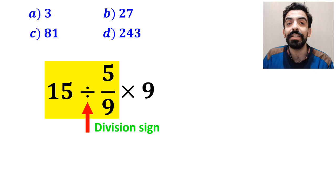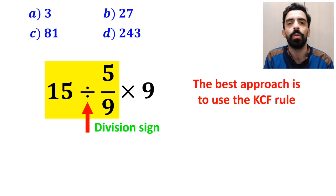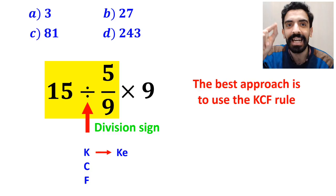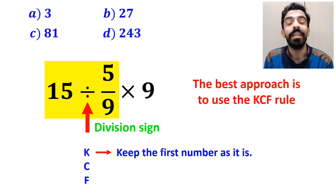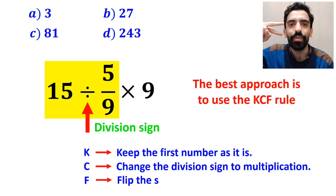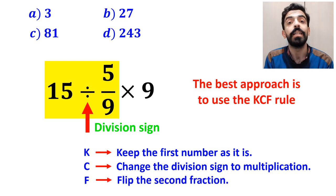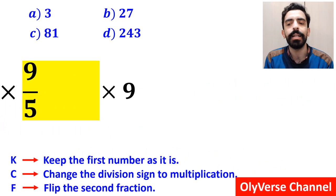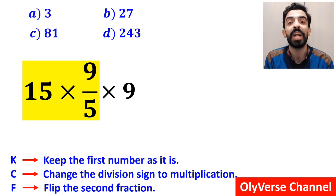Whenever we see a division sign between two terms, the best approach is to use the KCF rule. In this rule, K stands for keep the first number as it is, C stands for change the division sign to multiplication, and F stands for flip the second fraction. So we remove the highlighted part and replace it with 15 multiplied by 9 over 5.